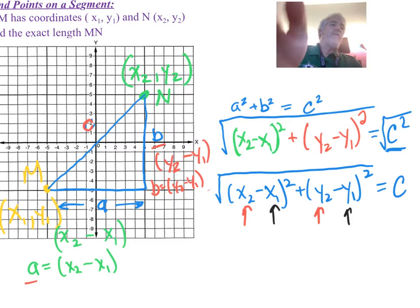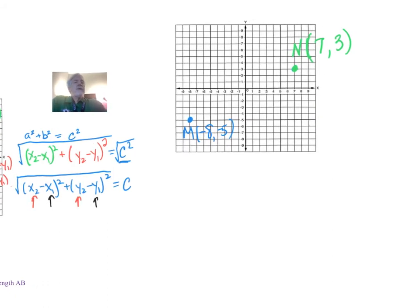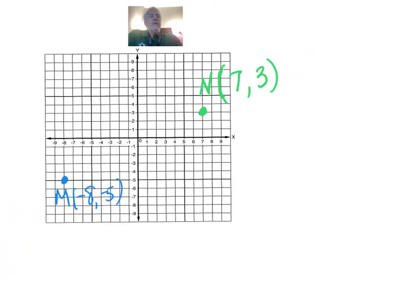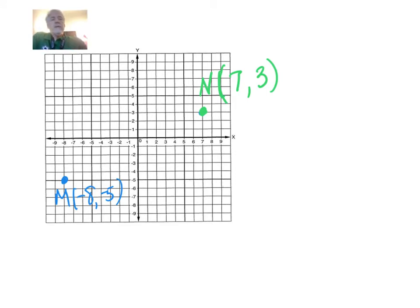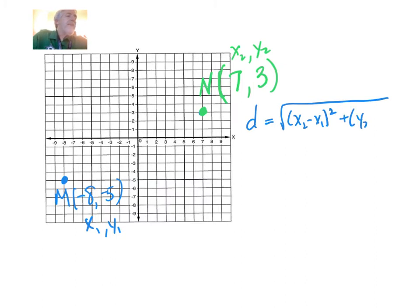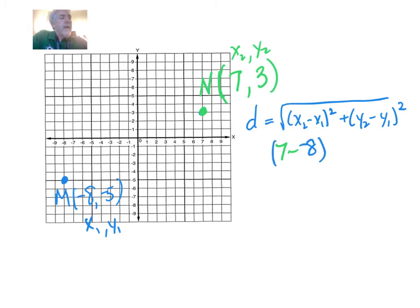Let's do an example. I have two points, M and N. N is x2, y2 and M is x1, y1. The distance equals the square root of (x2 minus x1) squared plus (y2 minus y1) squared. My x2 is 7, my x1 is negative 8, so I'm subtracting negative 8 and squaring that result.